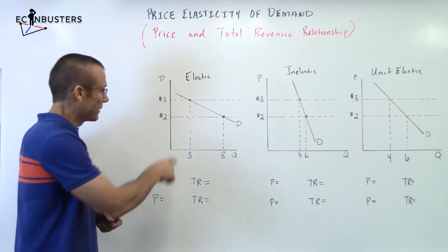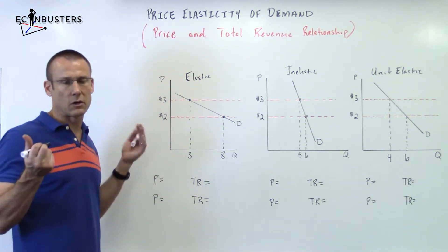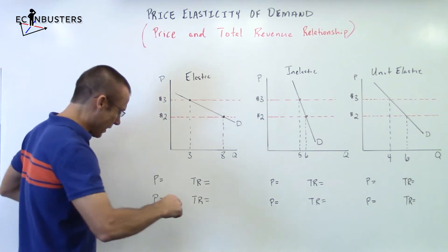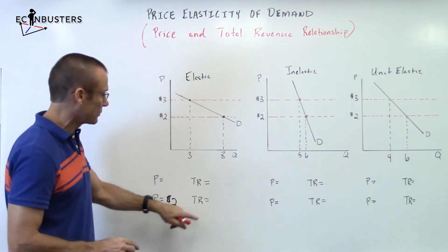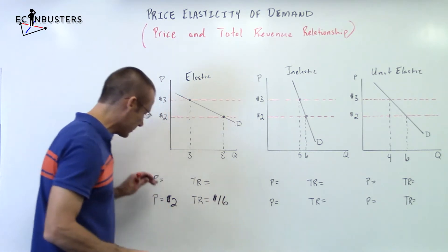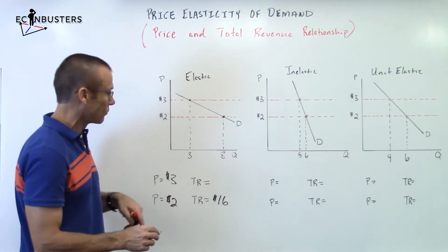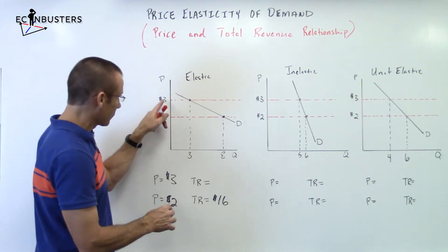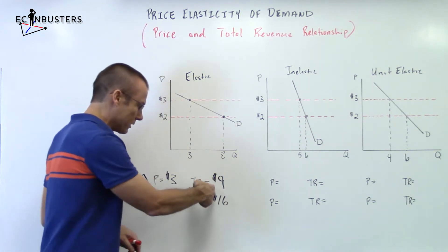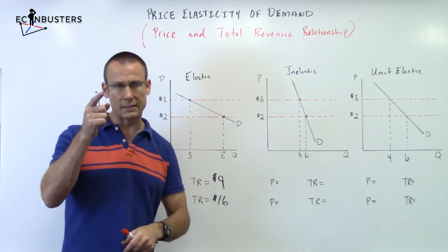Let's look at the elastic curve. I'll talk about price going up and price going down — let's start with price going up. At a price of two dollars, what's the total revenue? Two dollars times eight equals sixteen dollars. Price goes to three dollars — we're now only buying three — so three times three, total revenue is nine dollars. Price went up, total revenue went down.